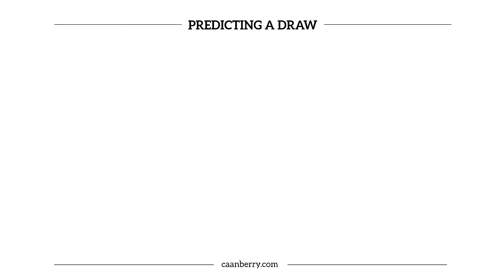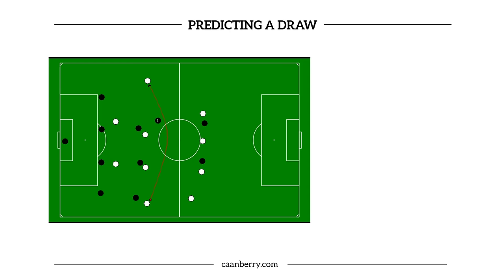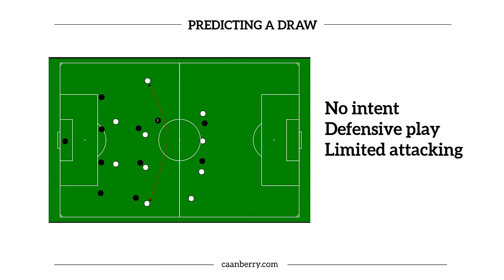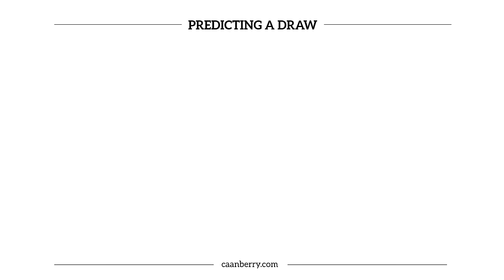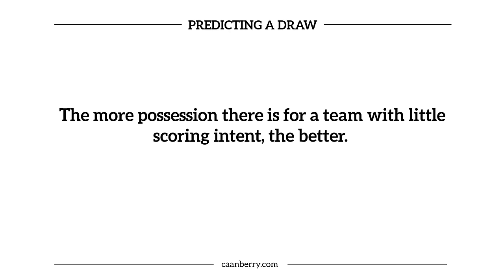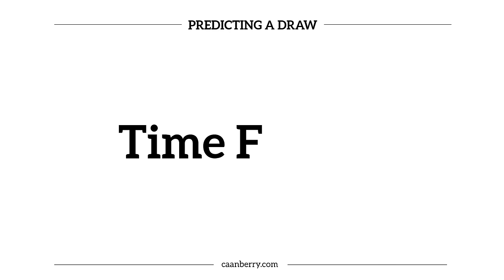On to possession: you're looking for similar traits to those we've just discussed within expected goals. The only difference is that with possession stats, the more possession a team has with little scoring intent, the better. It doesn't necessarily matter if one team is holding possession more, so long as they aren't converting that into serious goal attempts. It's sometimes better if one team is hogging the ball but can't translate that into shots on target.